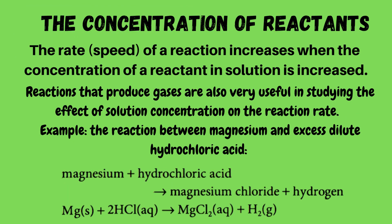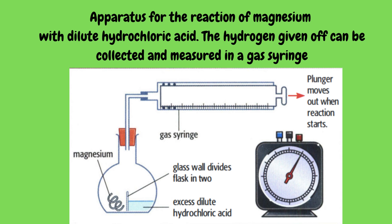The second factor is the concentration of reactants. The rate of a reaction increases when the concentration of a reactant in solution is increased. Reactions that produce gases are very useful in studying the effect of solution concentration on reaction rate. For example, the reaction between magnesium and excess dilute hydrochloric acid: magnesium plus hydrochloric acid gives magnesium chloride plus hydrogen. The hydrogen gas given off can be collected and measured in a gas syringe.